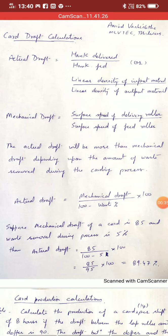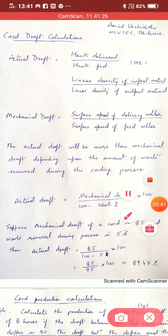So draft is calculated by two methods. These are actual draft and mechanical draft. Actual draft is hank delivered divided by hank fed or in terms of linear density, linear density of input material divided by linear density of output material. Whereas mechanical draft is calculated on the basis of surface speed of delivery roller and feed roller.